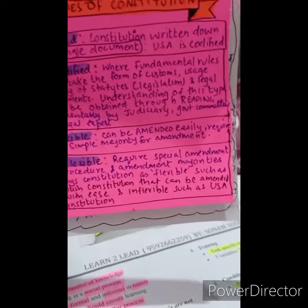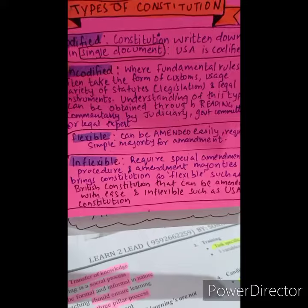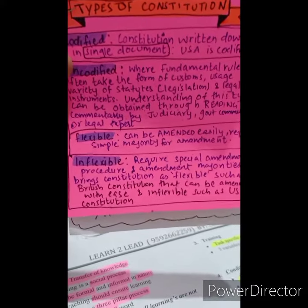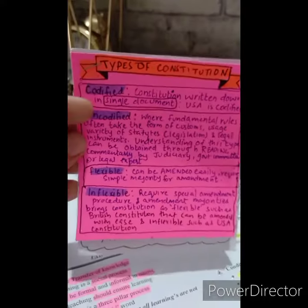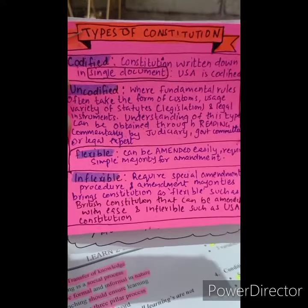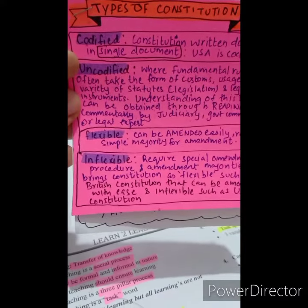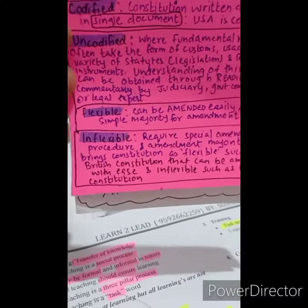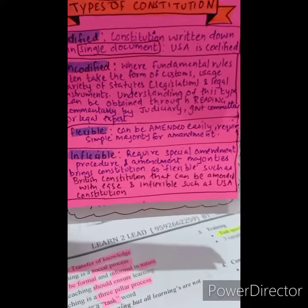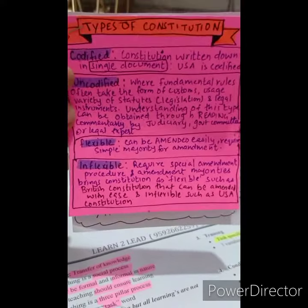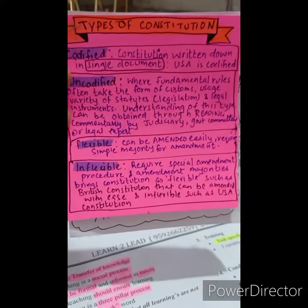The USA is the best example of an inflexible constitution. The British constitution is the best example of a flexible constitution, which can be easily amended. The USA requires a special majority and a rigid process for amending the constitution.